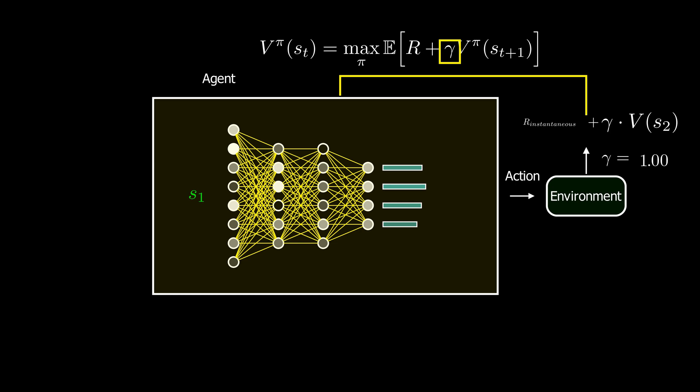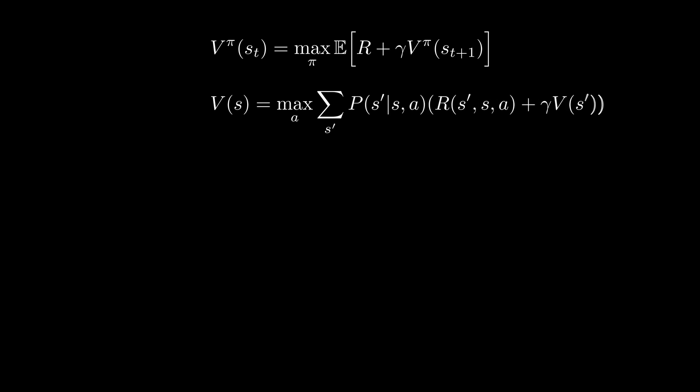It should be noted that we can always absorb the gamma parameter into the value function by redefining it to be consistent with how the value function appeared in the Hamilton-Jacobi-Bellman equation. Let's now move one step further and explicitly compute the expectation value in the Bellman equation where the term P represents the transition probability. It denotes the probability of transitioning to state S' given that the agent is in the state S and takes action A.